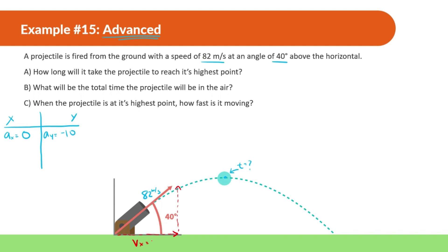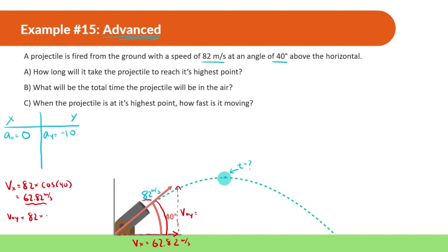We can find what velocity in x is at the beginning and the initial velocity in y. I'm going to use this angle and this hypotenuse to do that. Using the hypotenuse 82 for vx with cosine of 40, I get 62.82 meters per second. And for y, pretty much the same thing except we use sine: 82 times sine of 40 gives us 52.71 meters per second.